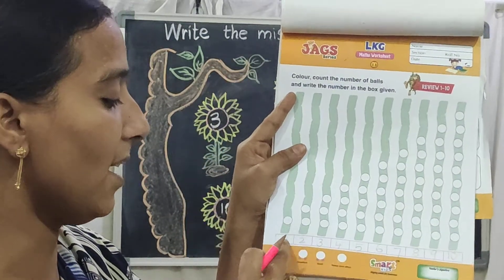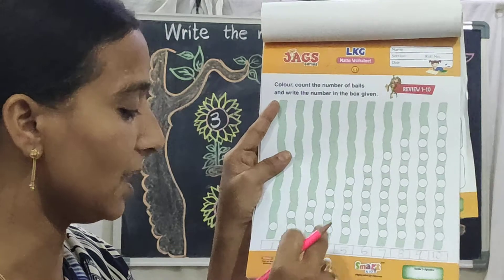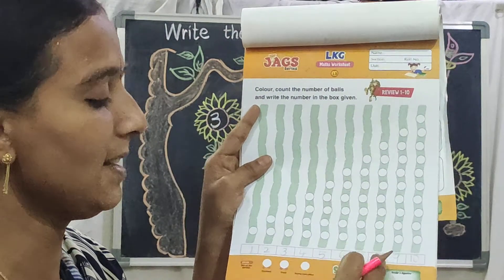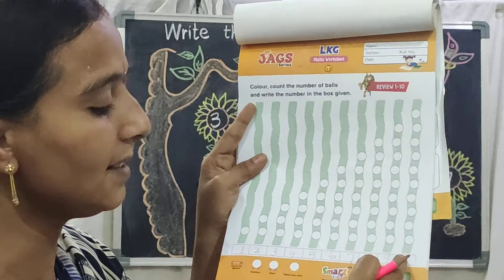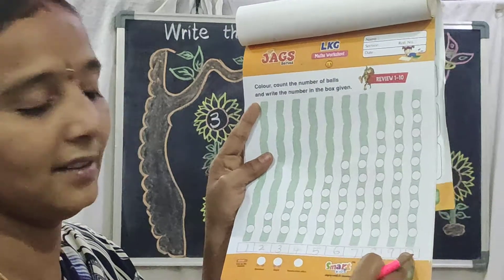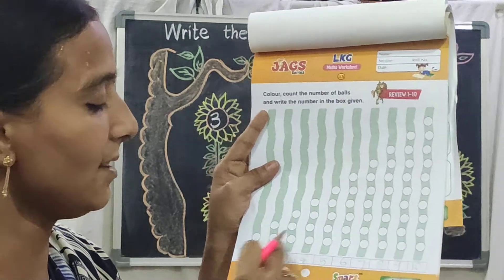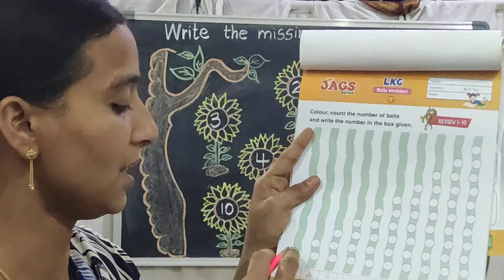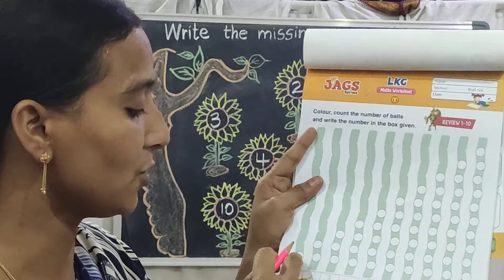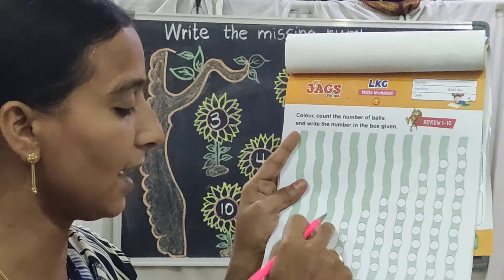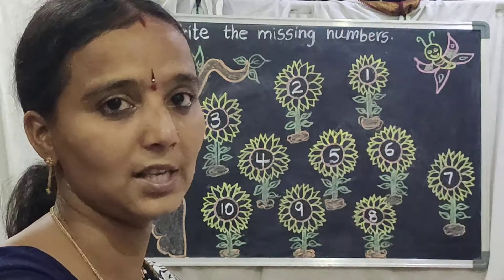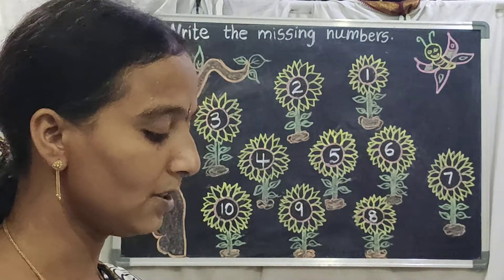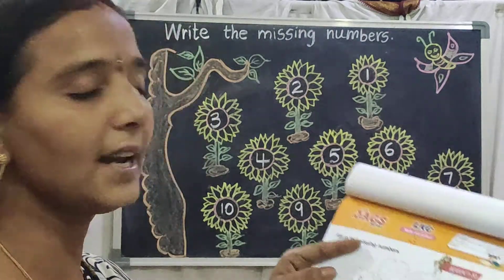See here, children — 1, 2, 3, 4, 5, 6, 7, 8, 9, 10. Here we are seeing up to 1 to 10 balls. After writing this, you should color all these balls. After completing coloring, you turn to the next page.